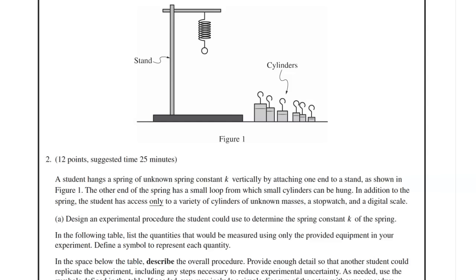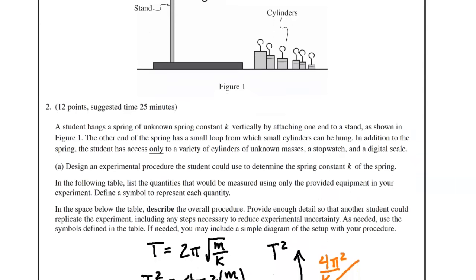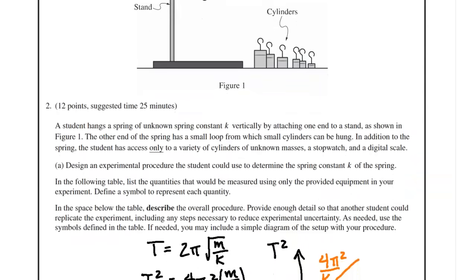Design an experimental procedure the student could use to determine the spring constant k of the spring. In the following table, list the quantities that would be measured using only the provided equipment in your experiment. Define a symbol to represent each quantity. In the space below the table, describe the overall procedure. Provide enough details so that another student could replicate the experiment, including any steps necessary to reduce experimental uncertainty. As needed, use the symbols defined in the table if needed. You may include a simple diagram of the setup with your procedure.